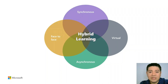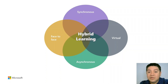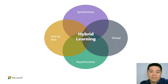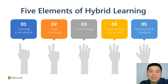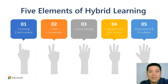A hybrid learning environment is a mix of all these models. A hybrid approach to learning builds on the successes of these models to intentionally create a learner-centered experience that is profoundly personalized, relevant, and engaging. In other words, hybrid learning is not a quick fix for educational institutions. Instead, it is a student-centered approach that combines the best of in-school and remote learning with digital engagement to enhance and accelerate learning to meet diverse learners' needs. Educational systems moving to a hybrid learning environment will need to focus on specific elements. The five elements of hybrid learning are: learning environment, class community, lesson design, engagement and interactivity, and assessment and feedback.